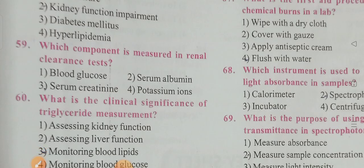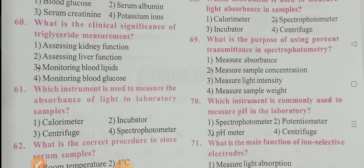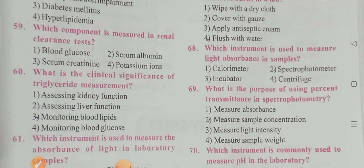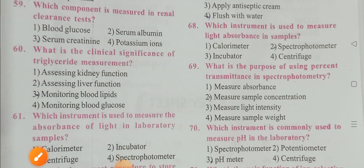Question 59: Which component is measured in the renal clearance test? Options: blood glucose, serum albumin, serum creatinine, potassium ions. Option 3 is the correct answer — serum creatinine is the component measured in the renal clearance test.